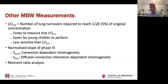Two other measurements to be familiar with are the normalized slope of phase three, and measurements derived from it: S-cond and S-acin — representing convection-dependent inhomogeneity regions and diffusion-convection interaction-dependent inhomogeneity regions, respectively. There is also moment ratio analysis.